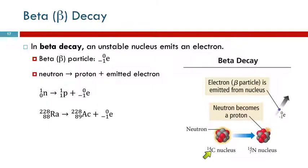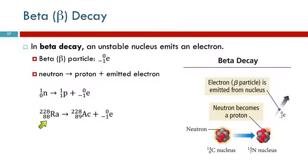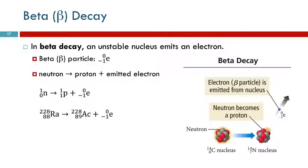Here's carbon-14, a radioactive form of carbon. When it undergoes beta decay, an electron leaves and the nucleus now has an additional proton, so the atomic number goes up and it becomes nitrogen. Another example: radium-228 undergoes beta decay, the electron is emitted, and what's left is actinium-228. The mass number doesn't change when the electron is emitted, but the atomic number goes up by one.